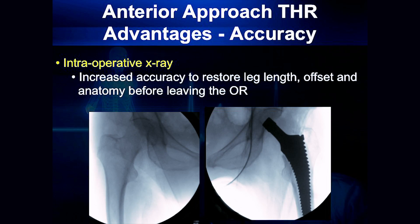As mentioned previously, we do use X-ray. This example shows essentially how we use it — we're replacing this hip, and what you see here is what we call a trial prosthesis, so it's not the final prosthesis.